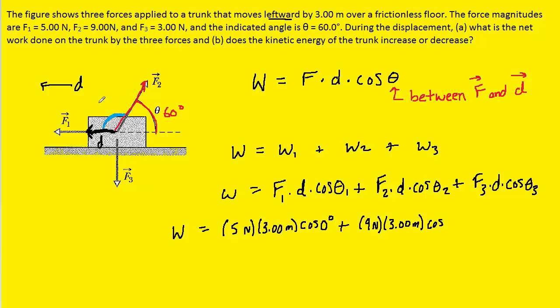That means that the blue angle that's marked has to be the 180 degrees minus the 60 degrees, which of course is 120 degrees. So that's going to serve as the angle between force F2 and the displacement. So we'll fill that in for theta two over here.